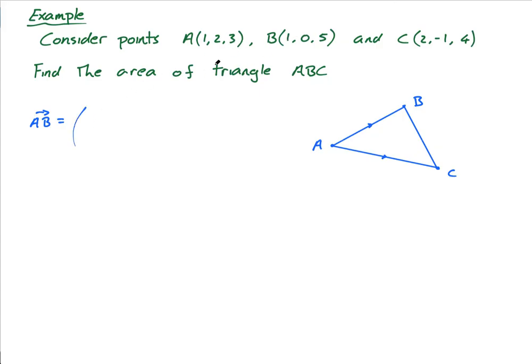Again, I'm using this rule that I taught you a long time ago. (1,0,5) minus (1,2,3), that's my b minus a, and that equals (0,-2,2). That's my AB.